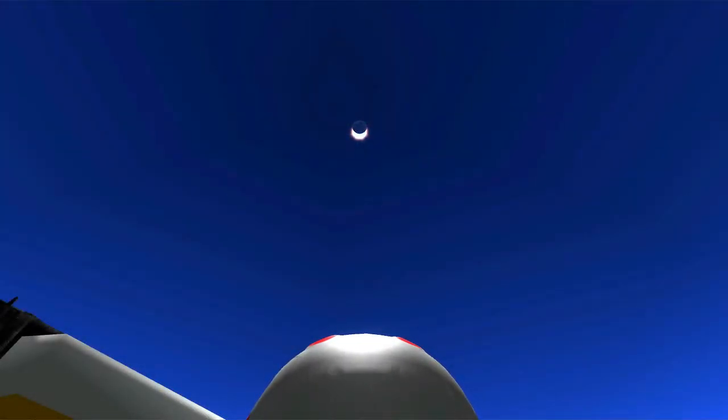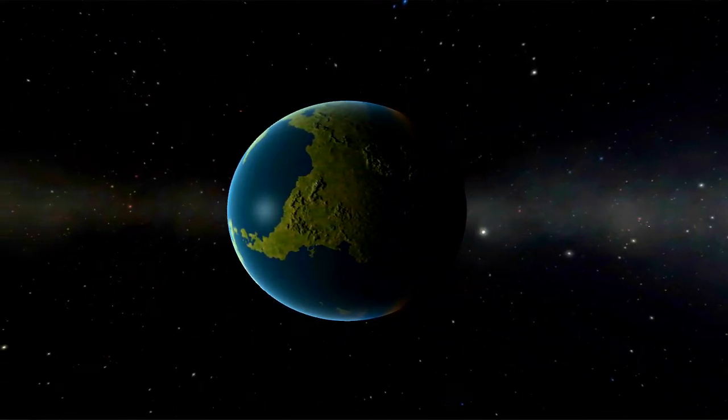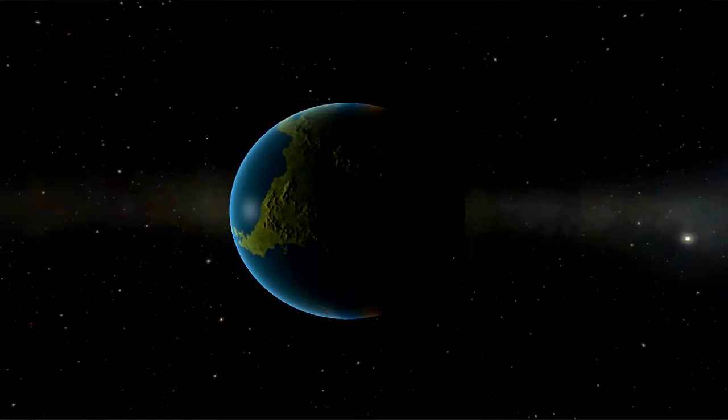Because Kerbin's moon is lined up with the ecliptic, solar eclipses occur once a month. One could argue that such a thing is possible in the real universe, but the more probable explanation is that it is like this to make things simpler for newer players.